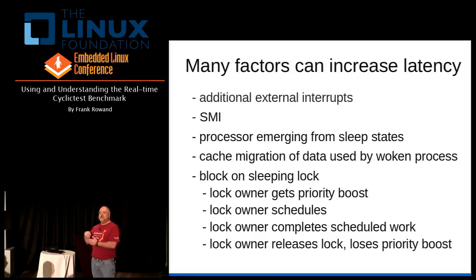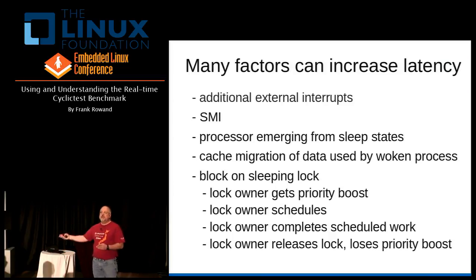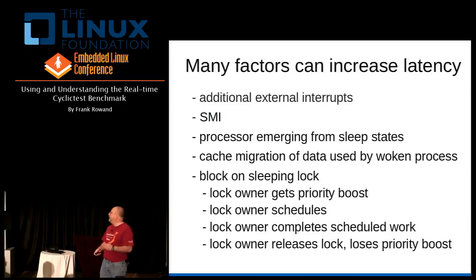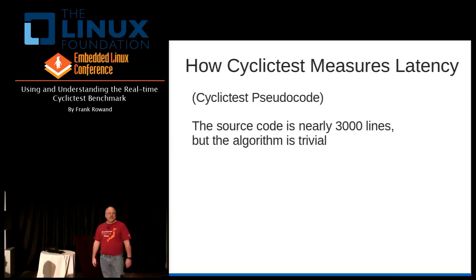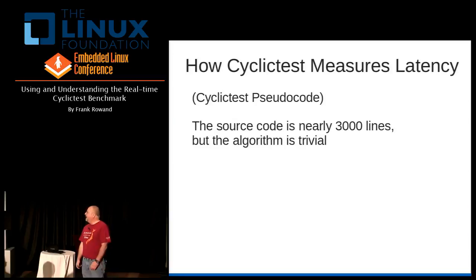If your real-time process is moving from one processor to another, it also needs to migrate its data from one cache to another — it's dirty data. And as Steve mentioned, there are a lot of lock issues. So we have our nice cyclic test program, which is a very common predominant real-time Linux benchmark, and I'm going to show you some pseudocode. It's going to be very straightforward, very trivial — you'll be surprised at how simple it is.